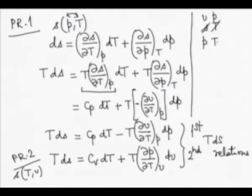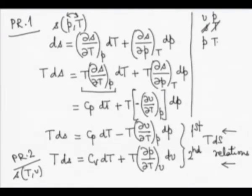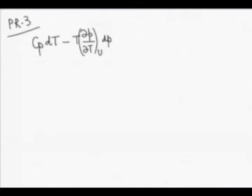If you want to check even before deriving, substitute PV equals RT on the right hand side and you should get that term equal to R. But let us first derive this. For deriving this we must use the two TdS relations. What I am going to do is equate the right hand side of the first TdS equation with the right hand side of the second TdS equation.